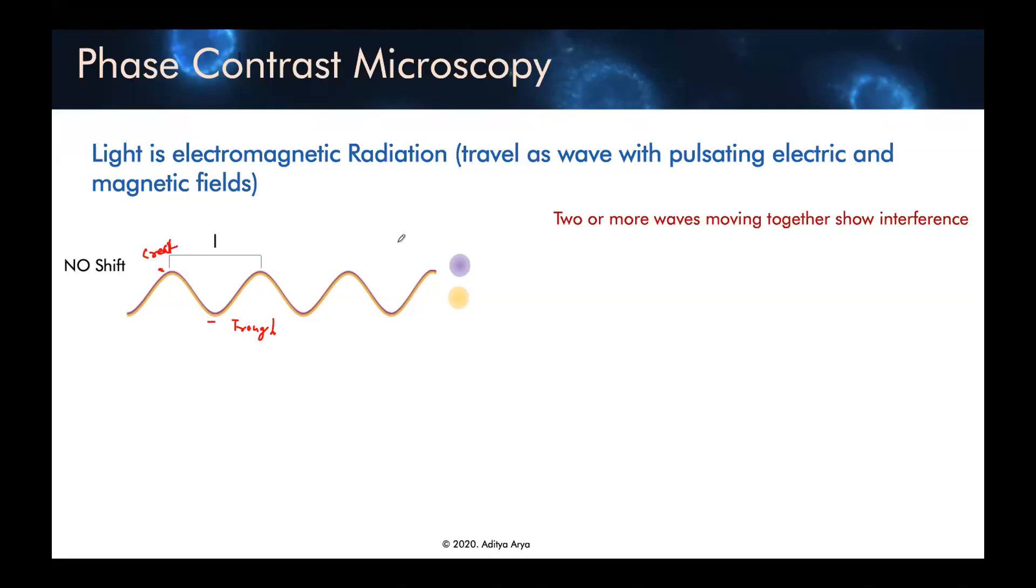So when there is no shift in the phase, one light is coming from background, and one light is coming from sample, and there is no shift, then there is a phenomenon which is known as constructive interference. This you may be knowing, when two waves have same phase, they will superpose each other and they will give rise to a newer wave with larger amplitude. And that's known as positive interference or constructive interference that gives rise to a more brighter light.